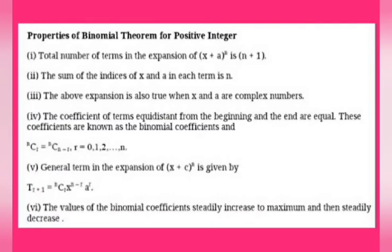The fifth property: the general term of this series is normally called tr plus 1, which is equal to ncr into x power n minus r into a power r. This is called the general term of the binomial theorem.